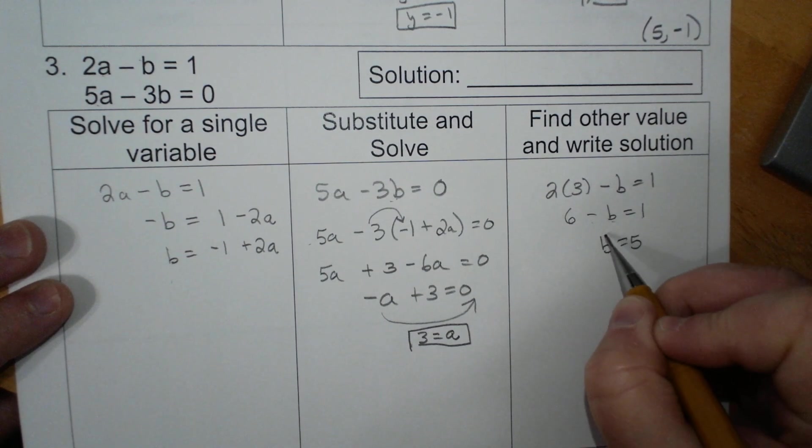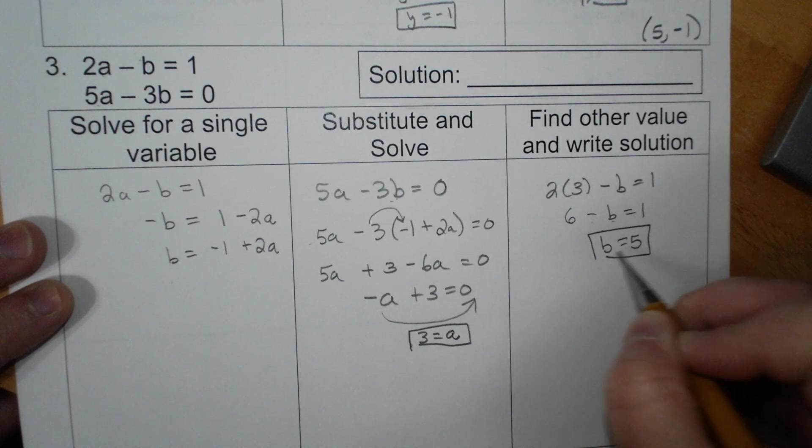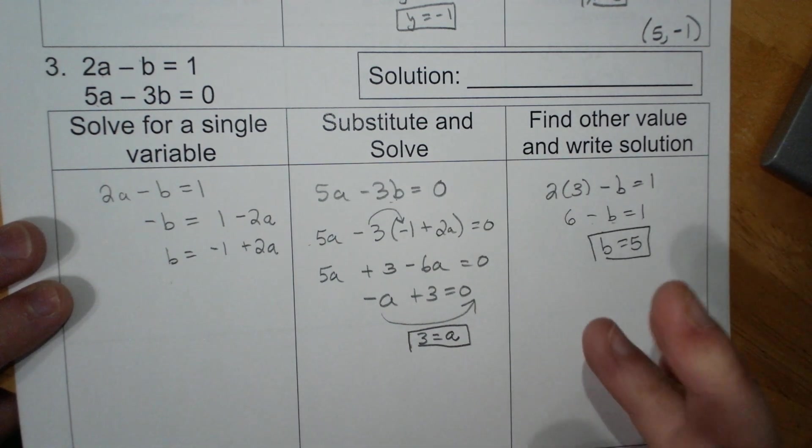B has to be 5. When you do your solutions it's an ordered pair and it's always alphabetical, so it's 3 comma 5.